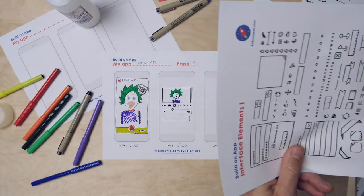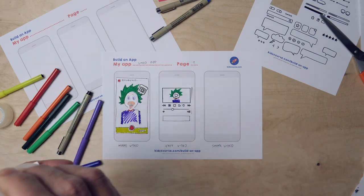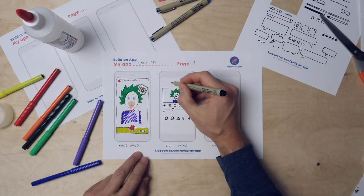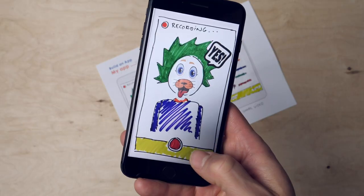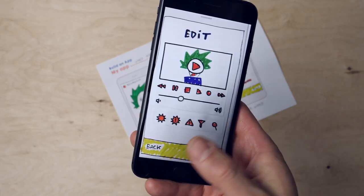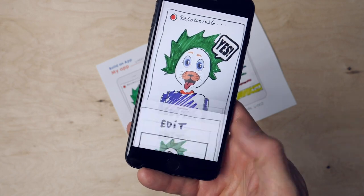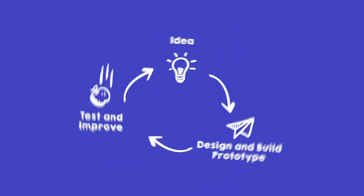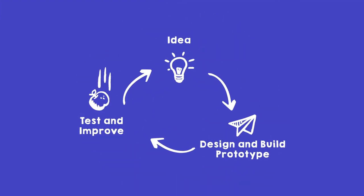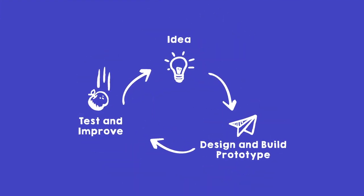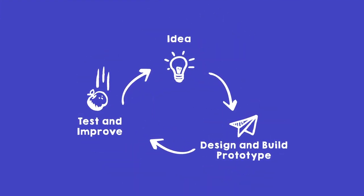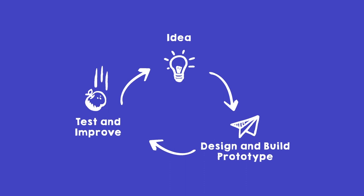In this series we're going to build an app ourselves. You're going to think of an app, design the screens, build the app and then test it. The best thing is to start with mission 1 and then do all the missions one by one. This way you'll discover how real designers and engineers create things: the engineering design process.